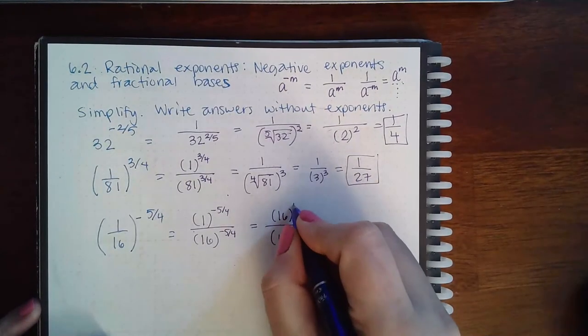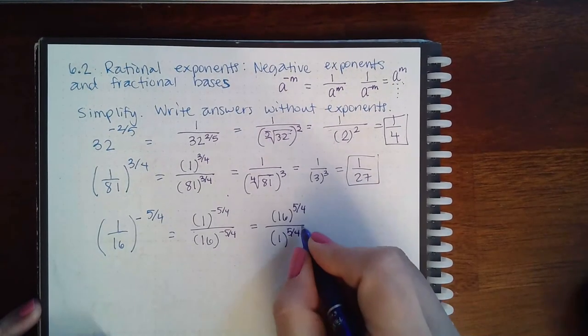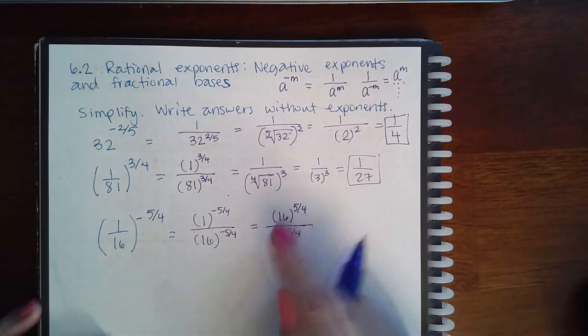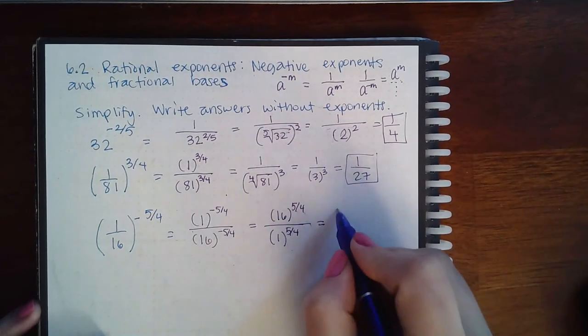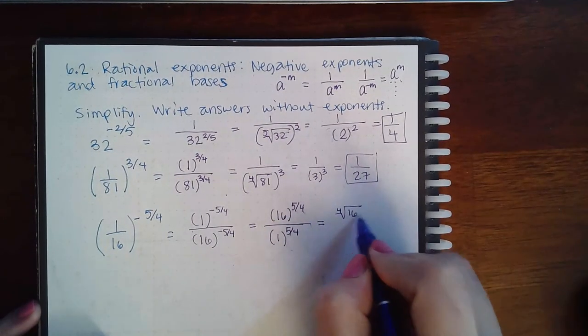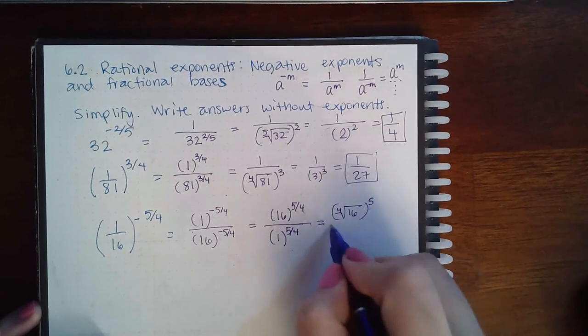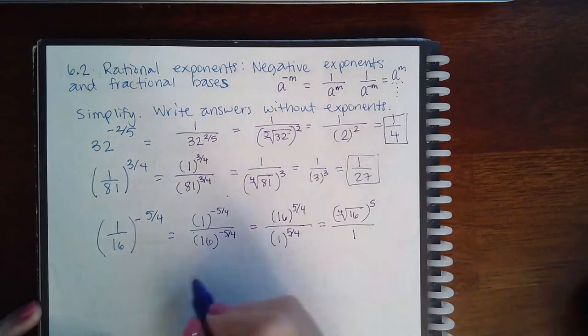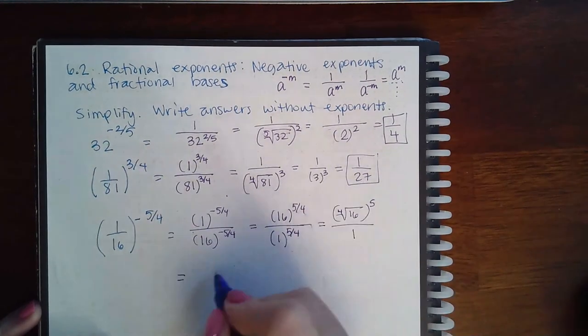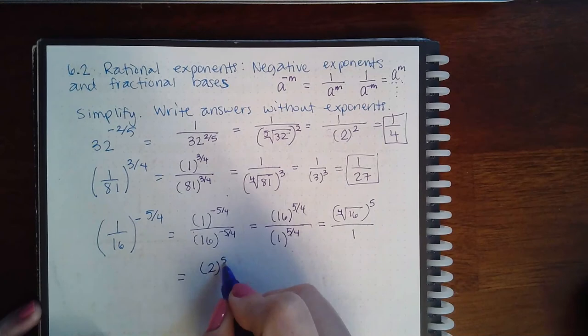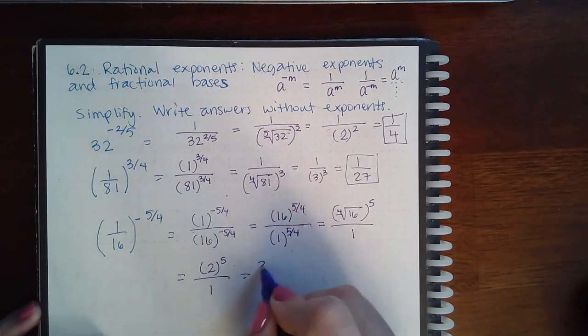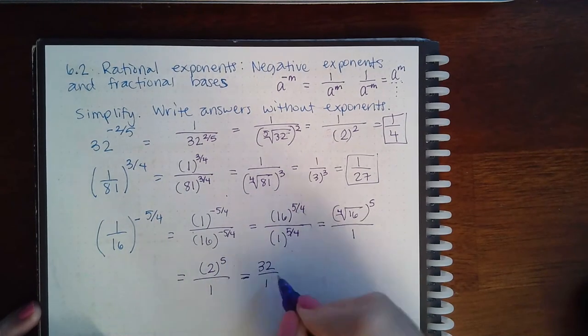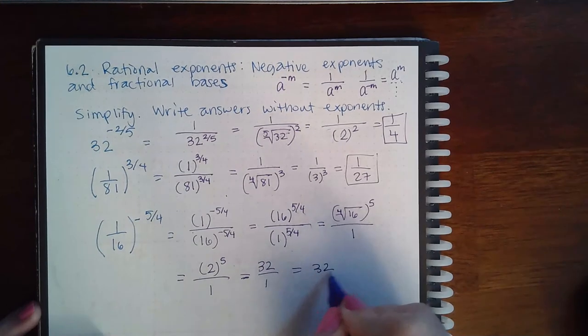Now that both are positive, I can evaluate it. So this is the fourth root of 16 raised to the fifth power. It doesn't matter what power you raise 1 to, it's still 1. So then we get the fourth root of 16 is 2. If I raise that to the fifth power, I get 32, and 32 over 1 is just 32.